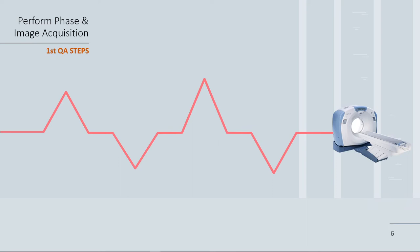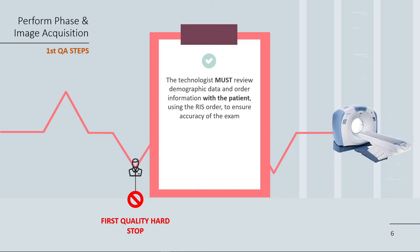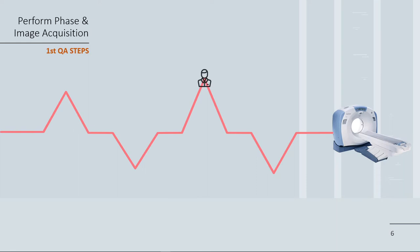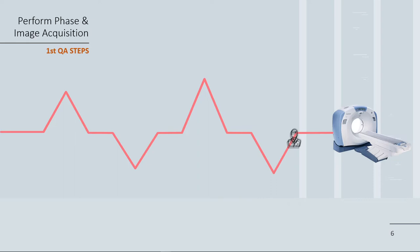Next, let's take a look at the perform phase, where the images are acquired. First, the patient arrives to the scheduled appointment. Upon arrival, the technologist prints the RIS order. Here, we encounter our first quality hard stop. The technologist must review the patient's demographic data and order information with the patient using the RIS order to ensure the accuracy of the exam. Critical identifying information such as the patient's name, date of birth, laterality, type of exam, and reason for the exam must be checked. Once verified, the patient is brought into the room. The technologist then uses the RIS document to verify patient selection and exam in the CT scanner worklist. Finally, the patient is scanned.